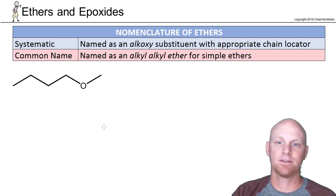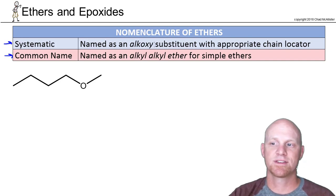So now we're going to take a look at naming ethers. And it turns out IUPAC accepts both a systematic as well as a common way of naming ethers. We'll start with the systematics here. In this case, the ether is not a major functional group. It's not going to be the parent chain. It is simply going to be an alkoxy substituent coming off that parent chain.